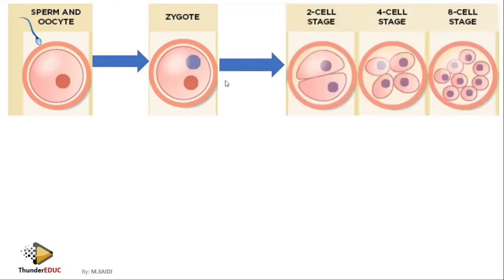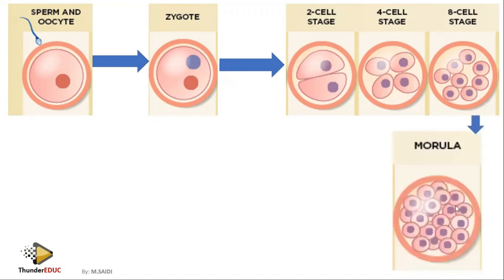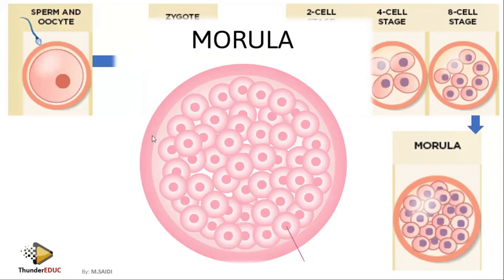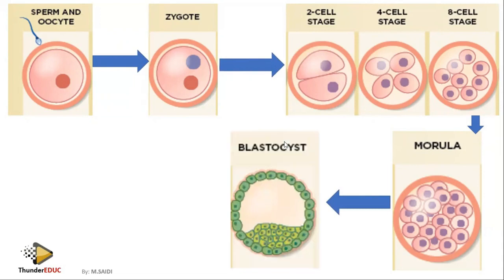The zygote must undergo a process called mitosis to form different cells. It divides: one cell becomes two, two becomes four, four becomes eight, and so on — it undergoes mitosis repeatedly. This forms what we call a ball of cells. When it undergoes mitosis repeatedly it forms a ball of cells called a morula.